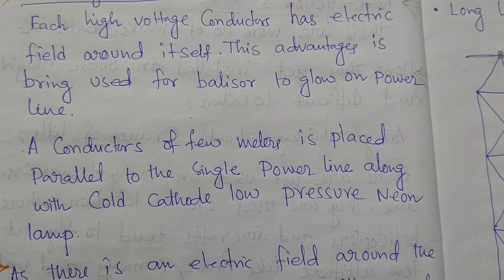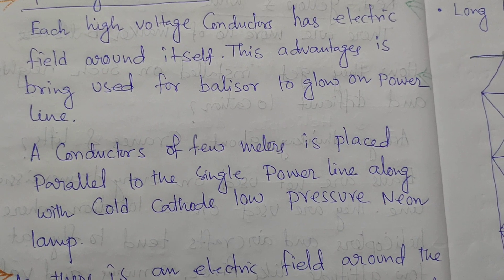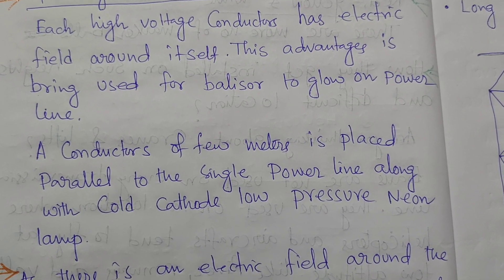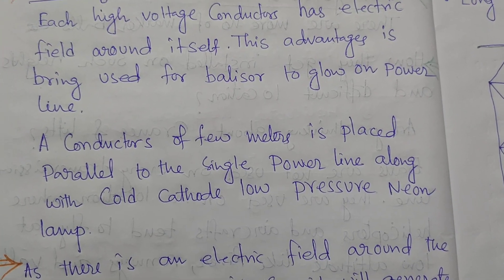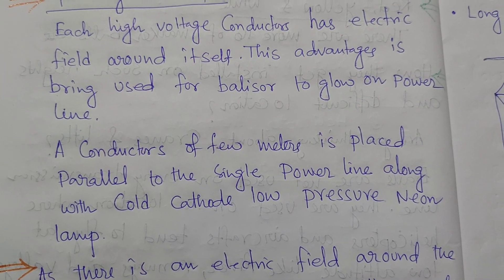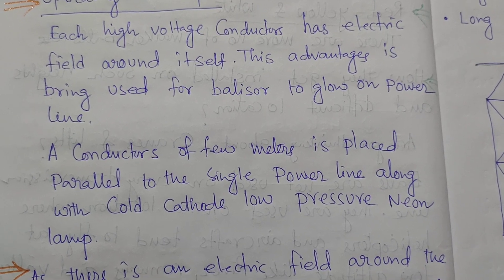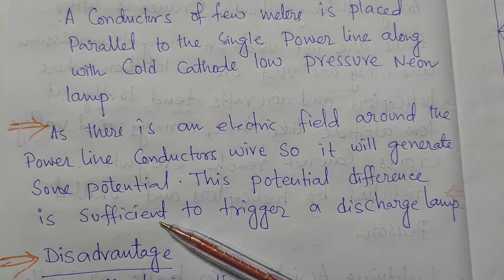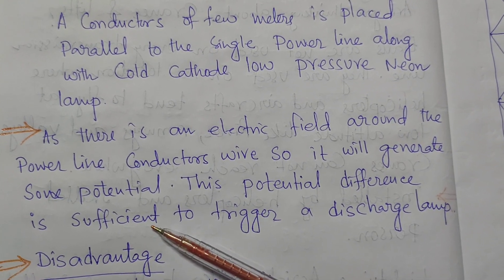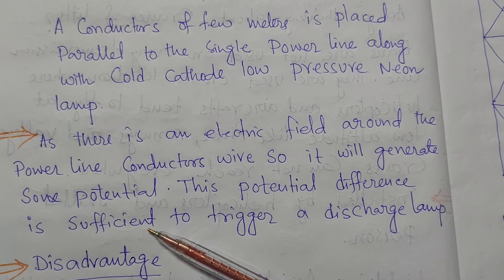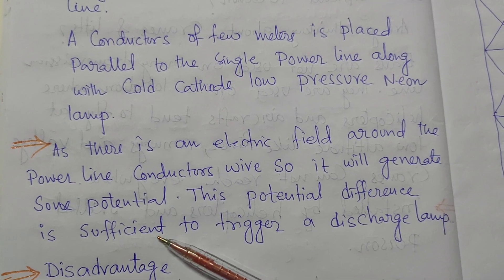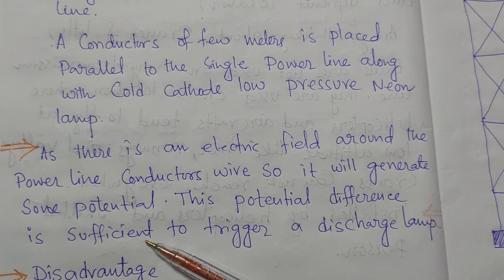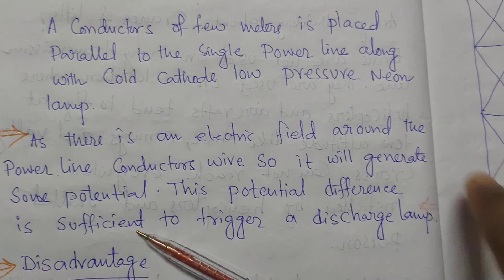The operating principle of the belisher: each high voltage conductor has an electric field around itself, and this is used for the belisher to glow on the power line. A conductor of a few meters is placed parallel to the single power line along with the cold cathode low pressure neon lamp. This electric field acts as a capacitive effect that causes the low pressure neon lamp to glow. The potential difference generated depends on the magnitude of the voltage being transmitted, and this is sufficient to trigger the discharge lamp.